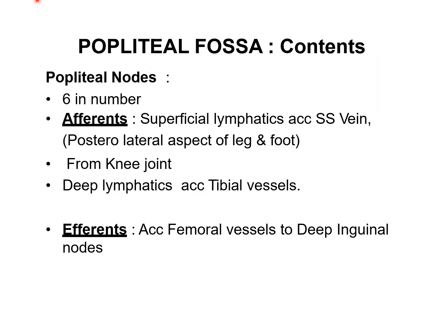The popliteal lymph nodes are usually six in number, embedded in the popliteal fat. Their afferents include superficial lymphatics accompanying the short saphenous vein from the posterior and lateral aspect of the leg and foot, and from the knee joint and deep lymphatics accompanying the tibial vessels. The efferent vessels from all popliteal nodes accompany the femoral vessels and drain into the deep inguinal lymph nodes.